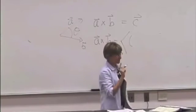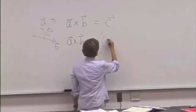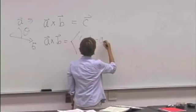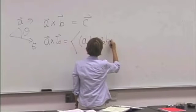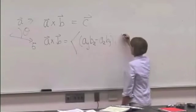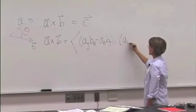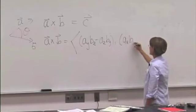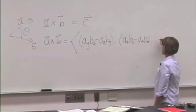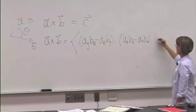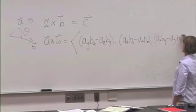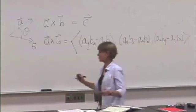Got to get it right. A sub Y times B sub Z minus A sub Z times B sub Y. That's the X component. And the Y component is A sub Z times B sub X minus A sub X times B sub Z. And the Z component is A sub X times B sub Y minus A sub Y times B sub X. And how do you remember this order?